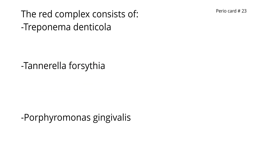Now we have to know what the red complex consists of. It consists of three types of bacteria: Treponema denticola, Tannerella forsythia, and Porphyromonas gingivalis.